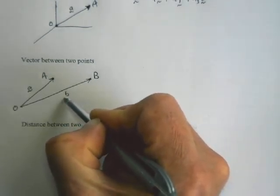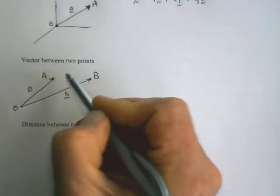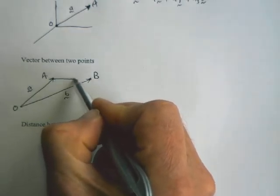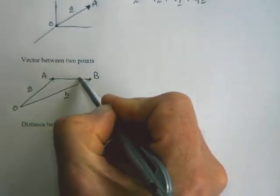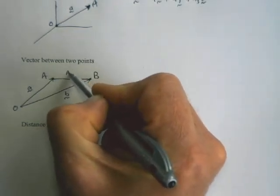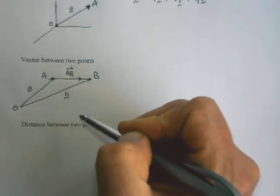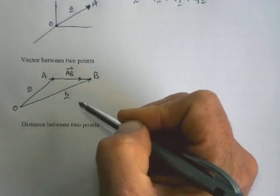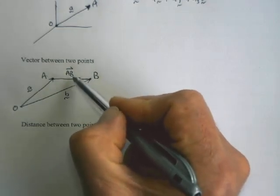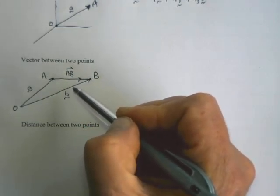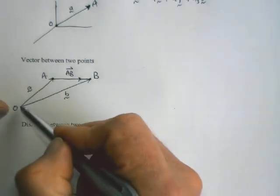And then we have a position vector B that points at that one. And what we're trying to do is we're trying to find the vector that goes from A to B. So we're trying to find this vector along here. And we'll label it AB and we'll put a vector sign over it. I could have put a squiggle under it. It doesn't matter. There's a number of notations. But AB is the vector that goes from A to B.